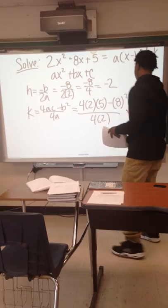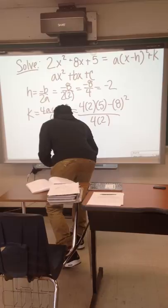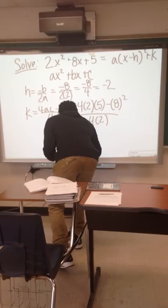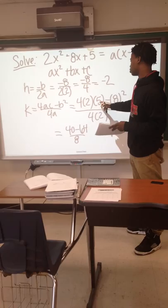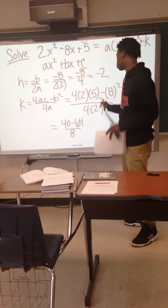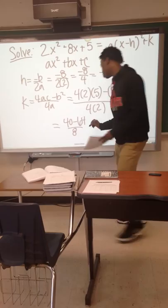Which equals 2, which equals 40 - 64 over 8. So 4 times 2 equals 8, 8 times 5 equals 40, and 8 to the second power is 64. Well, you keep this, so 8 squared is 64, and 4 times 2 is 8. So this equals -3.